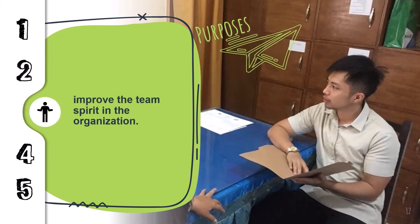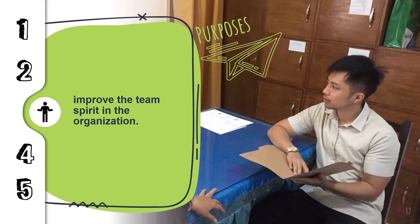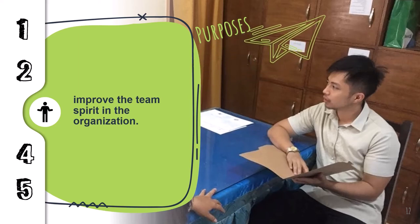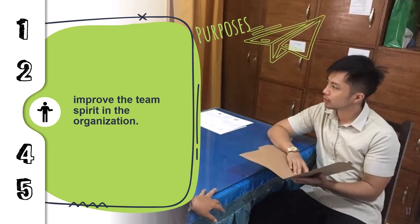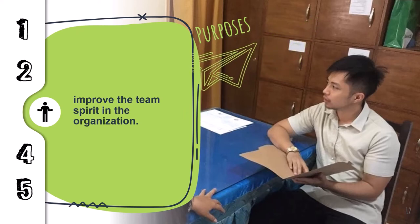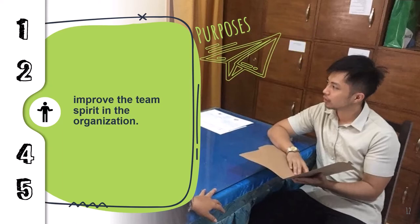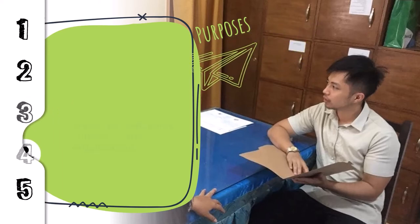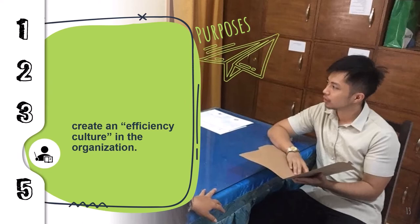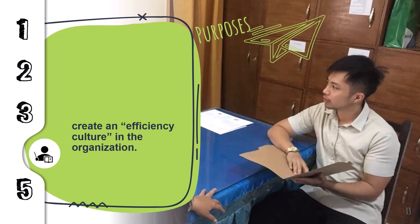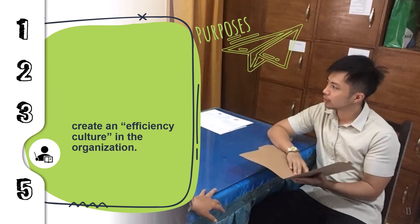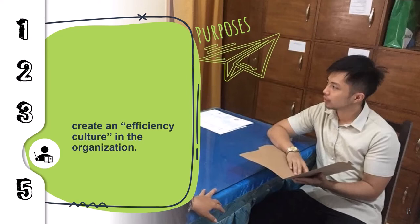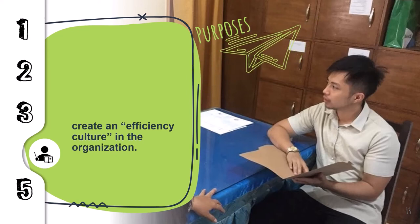Third, improve the team spirit in the organization — this requires creating a culture where superior-subordinate relationships, teamwork, and collaboration among subunits are strong. Fourth, create an efficiency culture in the organization which leads to greater organizational effectiveness, where resources are properly utilized and goals are achieved in a better way.